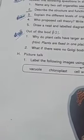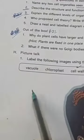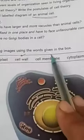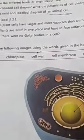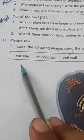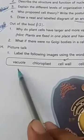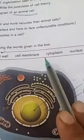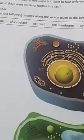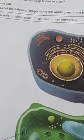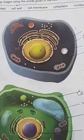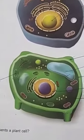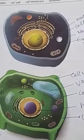The next exercise is Exercise H — Picture Talk. Label the following images using the words given in the box: vacuole, chloroplast, cell wall, cell membrane, cytoplasm, and nucleus. A diagram is given showing an animal cell and a plant cell. You have to label these organelles.